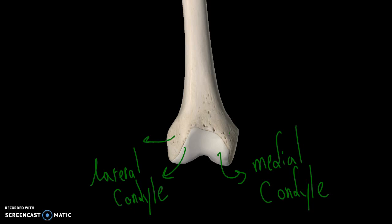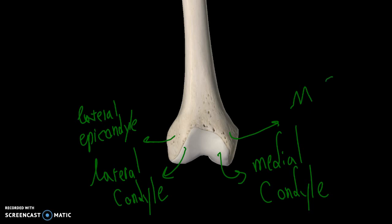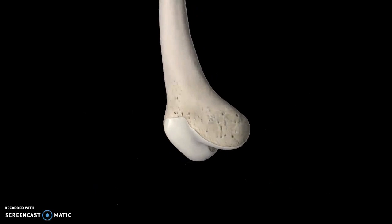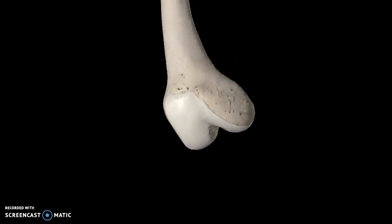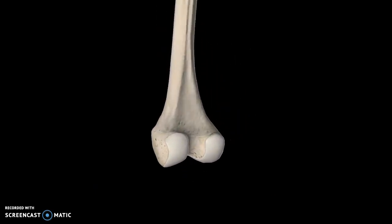Moving up just slightly, you are going to see the epicondyle. So it is still going to be lateral epicondyle, and this one is going to be the medial epicondyle. One last structure to pay attention to is this pointy structure that is very visible. This is what we call the adductor tubercle.